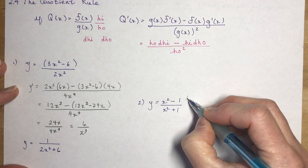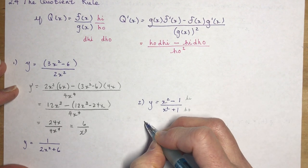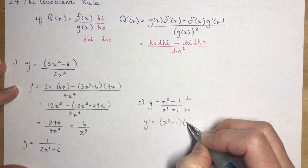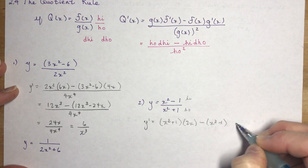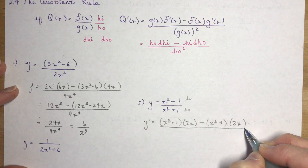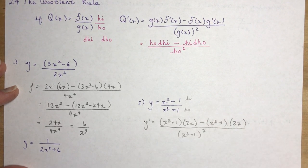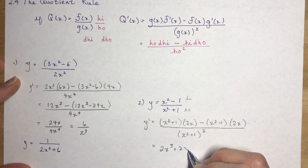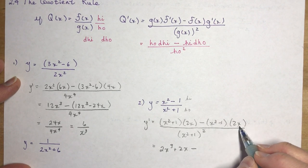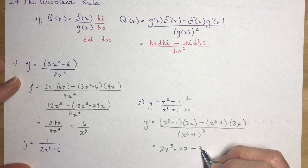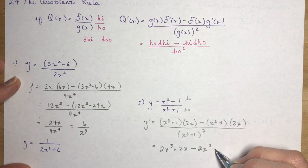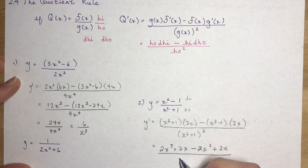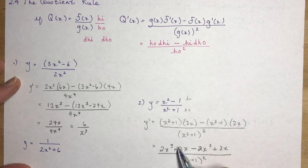Let's look at number 2. y = (x² - 1)/(x² + 1). This is high, this is low or ho. So y prime is ho d-hi minus high d-ho all over ho squared. And now I expand. That gives me 2x³ + 2x minus 2x³ plus 2x over (x² + 1)². Gathering like terms: 2x³ - 2x³ gives me 4x all over (x² + 1)².